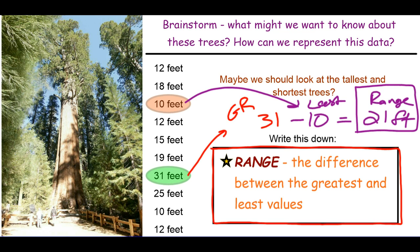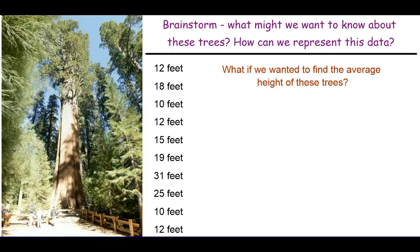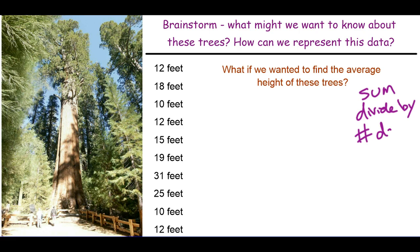The range isn't the only way we can represent the data. We might want to find the average height of all these trees. To find the average, we're going to add up all the data points and find the sum of everything, then divide by the number of data points that we have.